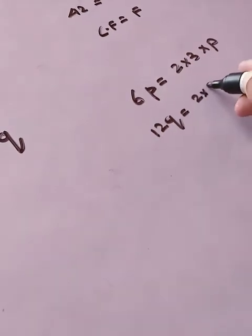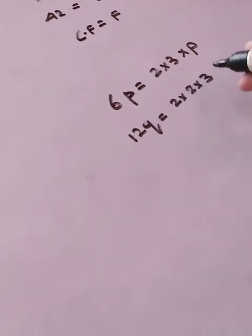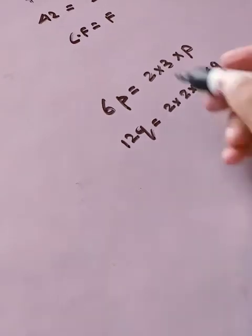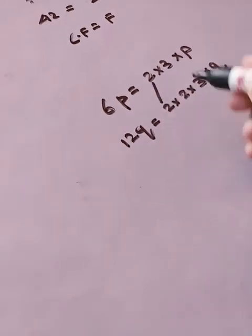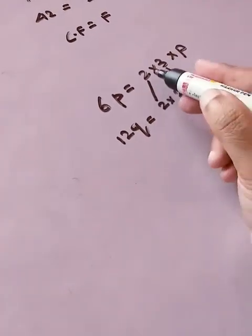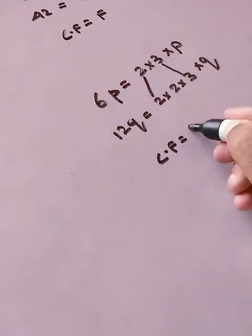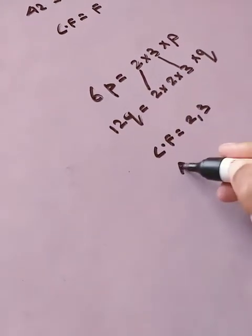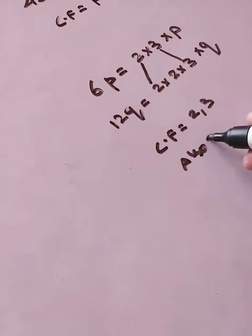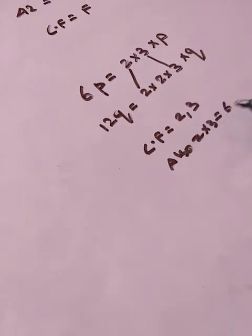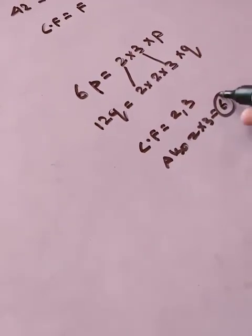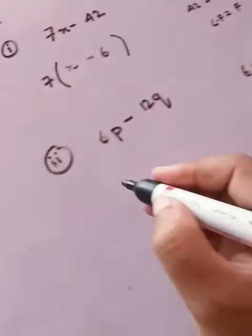And 12q can be written as 2 into 2 into 3 into q. Now what is the common term? This is a common term, this is a common term. So common factor means 2 and 3, which we can write as 2 into 3, that is 6.